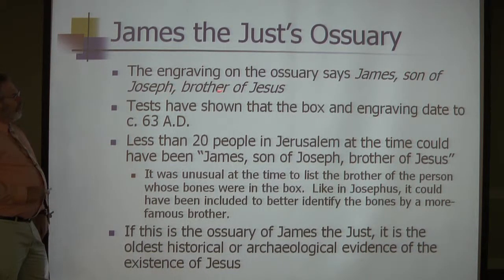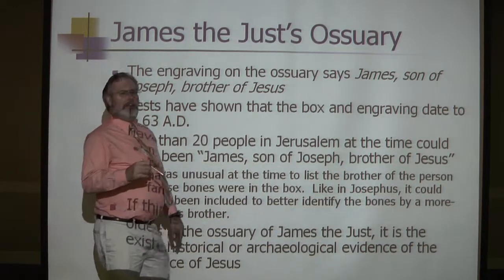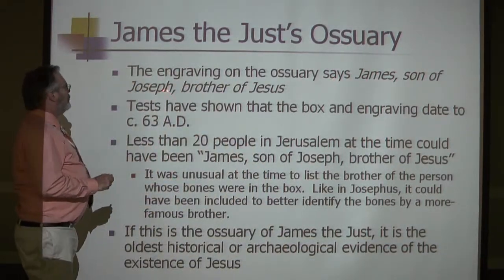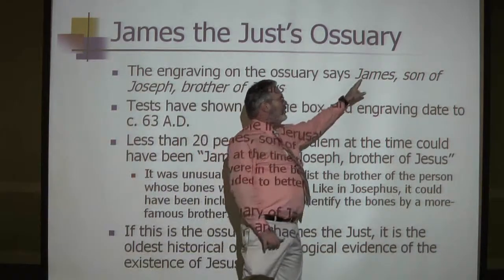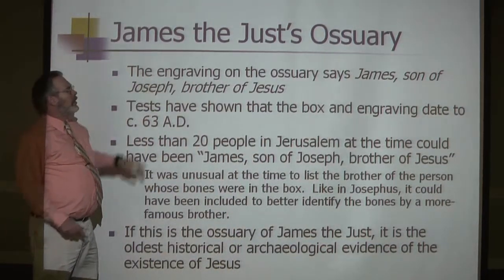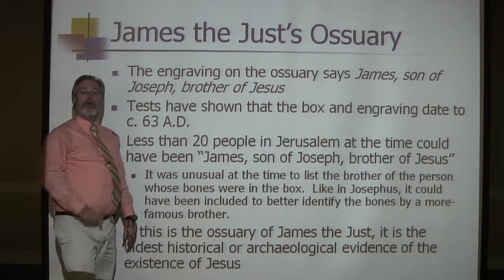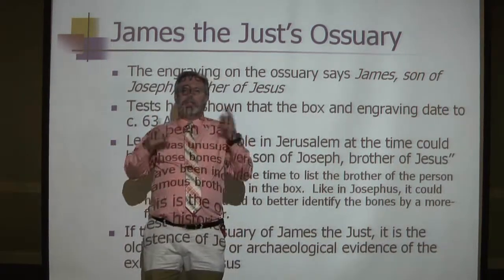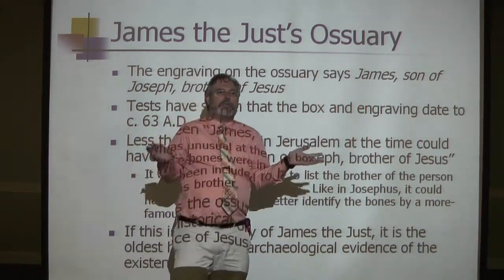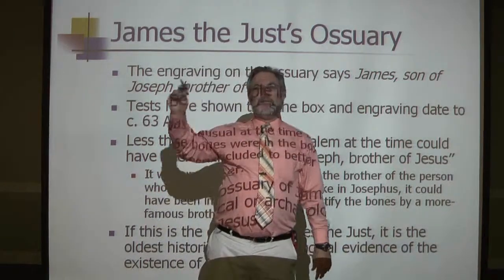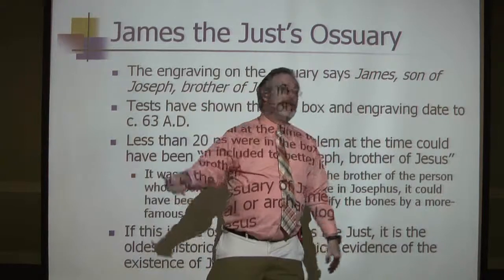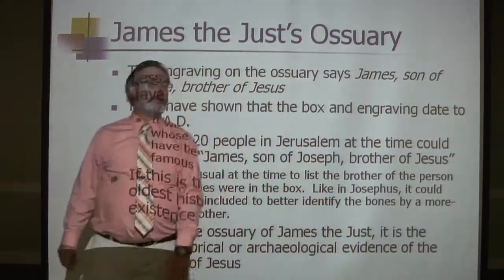We do have a couple of problems when we look at what the inscription says. Of course it's not in English — if it had been in English it would be somewhat suspect in terms of authenticity. It reads: James, son of Joseph, brother of Jesus. The first objection people raised is that it was very typical to say 'James, son of Joseph,' but it would have been very unusual to add 'brother of somebody.' However, if your brother is Jesus Christ — the Messiah — then it seems someone might add that to say, 'Hey everybody, this is THE James. This isn't just any James.' So that was the first issue.